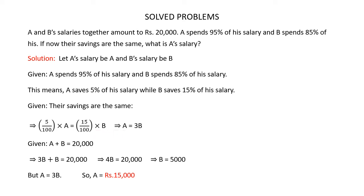It is given that A and B's salaries together amount to Rs.20,000, so A + B = 20,000. Since A = 3B, substituting gives 3B + B = 20,000, so 4B = 20,000. On solving, B = 5,000. Since A = 3B, A = Rs.15,000. So A's salary is Rs.15,000.